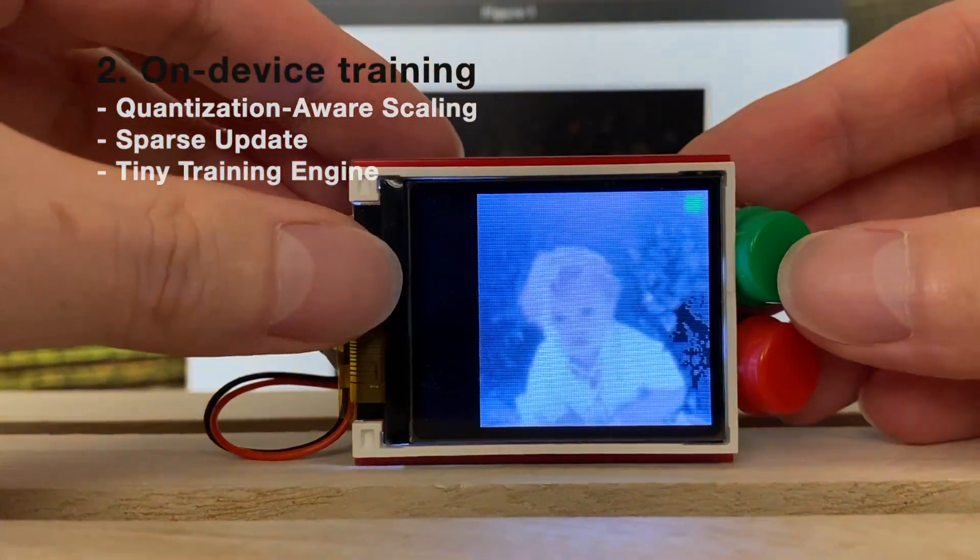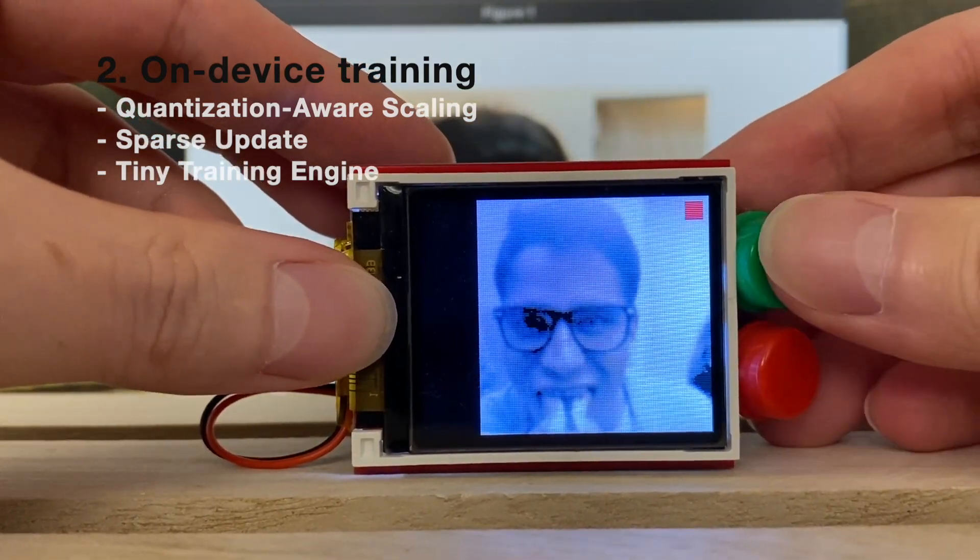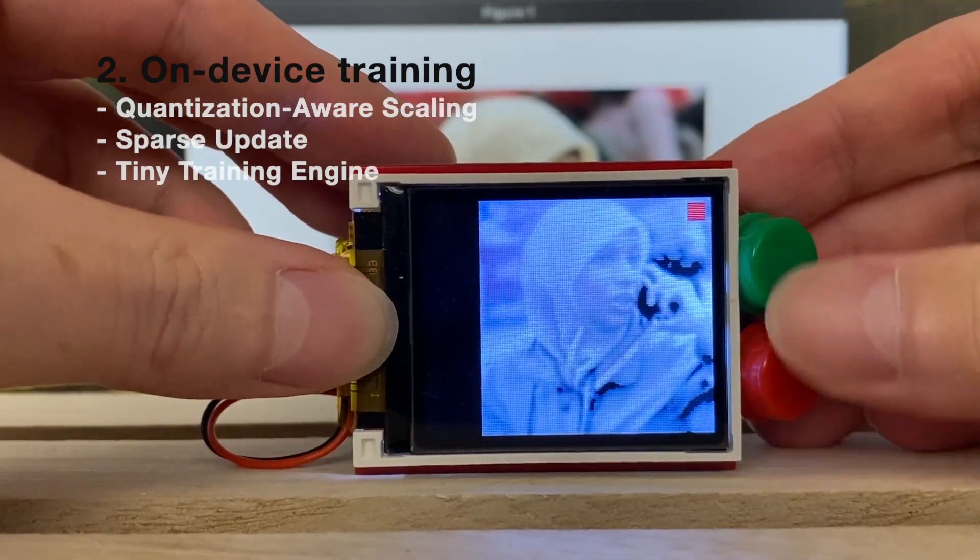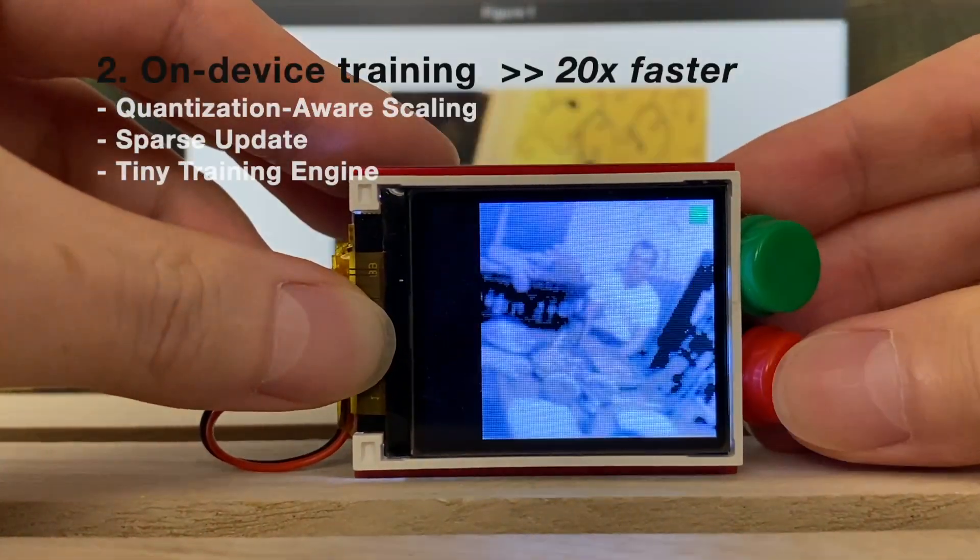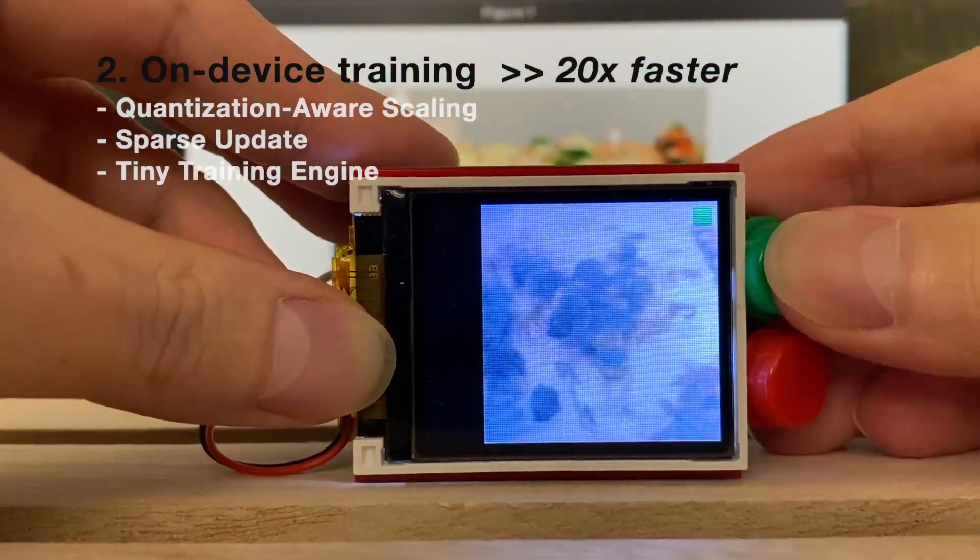Now the testing is done. We then perform training with some data to improve the performance. The label for each sample is provided manually through the two buttons, red and green, on the microcontroller. The training is done on the microcontroller within the small memory budget and limited computing capability.